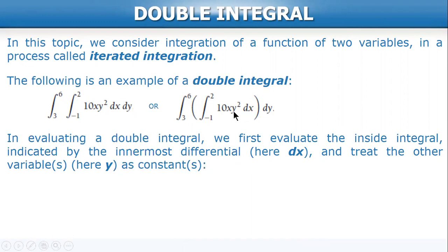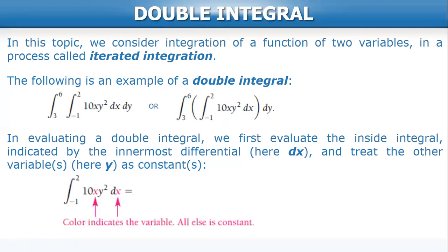In this case the innermost differential is dx, and at the same time you treat the other variable or variables as constant. So in this case it's only y — the other variable is y. You treat y as constant for the inside integral, and you only evaluate x since it's dx. So 10y² will be considered as constant.